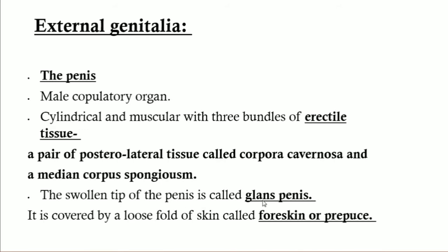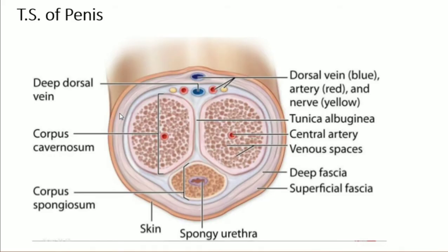The penis is covered by the skin. There is a fold of skin called the prepuce. This is the external structure of the male genital organs, and it helps for copulation.